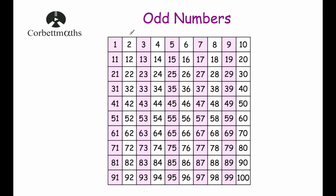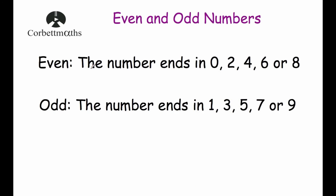So odd numbers will be numbers that end in either 1, 3, 5, 7 or 9. Even numbers end in 0, 2, 4, 6 or 8. And odd numbers end in 1, 3, 5, 7 or 9.